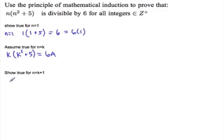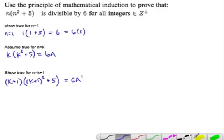Show true for n equals k plus 1. So we have k plus 1, k plus 1 squared plus 5. And that should be some 6a prime. Okay, so this is our substitution piece. And this is our goal. Substitution.